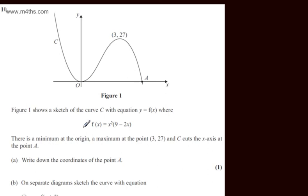There's a minimum at the origin, a maximum at the point 3 comma 27, and C cuts the x-axis at the point A. In part A, we're asked to write down the coordinates of the point A. The question carries one mark.